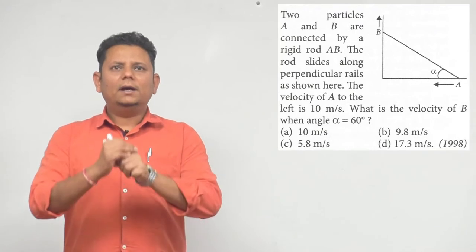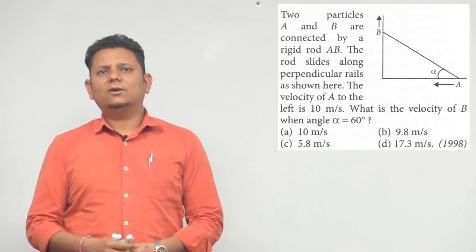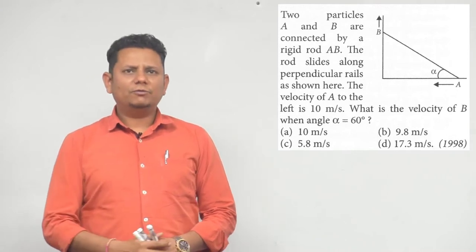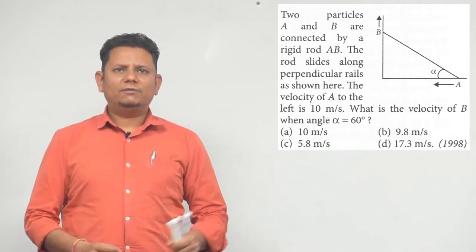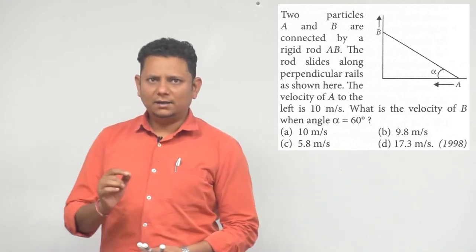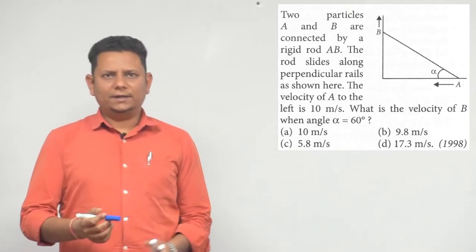Next question: Two particles A and B are connected by a rigid rod AB. The rod slides along perpendicular rails as shown here. The velocity of A to the left is 10 meters per second. What is the velocity of B when angle alpha equals 60 degrees?